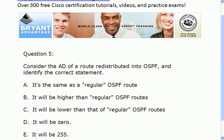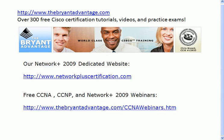Finally, our OSPF question. The AD of a route that's redistributed into OSPF is going to have the exact same AD as the native OSPF routes. Remember, EIGRP has different administrative distances for internal and external routes — those external routes being the ones learned via redistribution. But while OSPF recognizes a route learned via redistribution as an external route, it does not by default change the administrative distance.